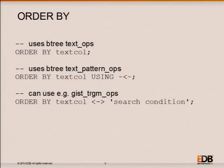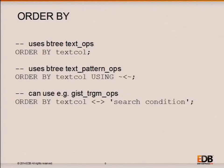There's a newer way that operator classes can play a part in ORDER BY, introduced in 9.1, where an operator class can declare that querying an index column against an operator allows the index to return values in an order given by that operator. This was added to support k-nearest-neighbor queries — for example, ordering by similarity to a particular text search condition. This is currently only supported by the GIST index access method, but that may change in the future.